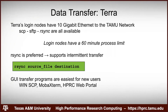For data transfer on Terra, the same deal as Grace. The difference is Terra only has one login node. The login node has a connection to the TAMU network — fastest if you're on campus plugged into Ethernet, then campus Wi-Fi, then off-campus via VPN limited by your ISP. The Terra login node also has a 60-minute process limit. Rsync is again preferred, and all GUI programs that work on Grace also work on Terra.